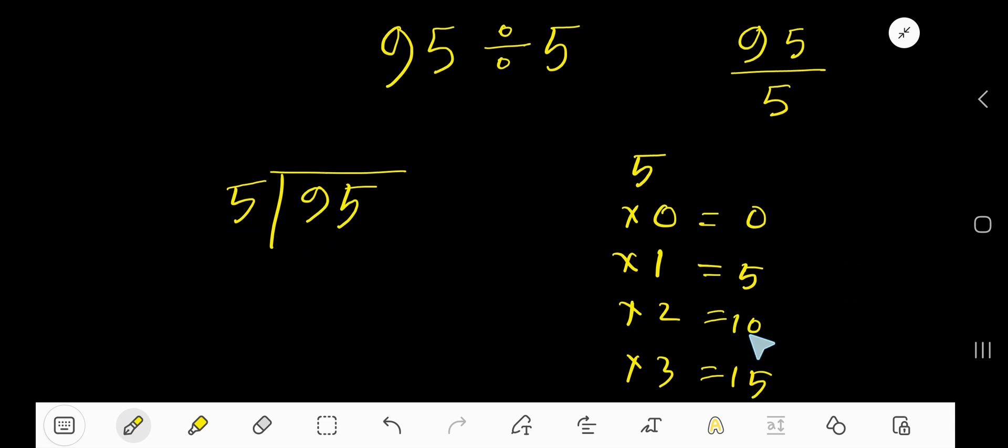Look here, 2 times is 10, but 1 times 5, so we have to stop here. 1 times 5 is 5. If you subtract, then you are getting, if you take 5 from 9, 4.